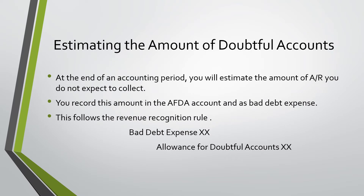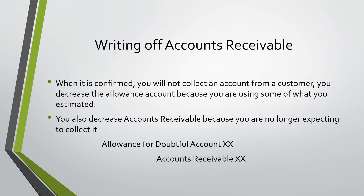Estimating the amount of Doubtful Accounts: at the end of an accounting period, you will estimate the amount of AR you expect you will not collect. You record this amount in the AFDA account and as Bad Debt Expense. This follows the Revenue Recognition Rule, and this is the journal entry typically prepared: Debit Bad Debt Expense, Credit Allowance for Doubtful Accounts.